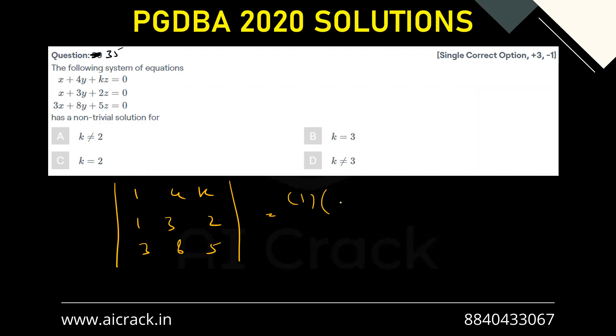we will be getting 1 times 15 minus 16 minus 4 times 5 minus 6 plus k times 8 minus 9, which equals to 0. So this becomes minus 1, this becomes plus 4, this becomes minus k equals to 0. So k equals to 3 is the answer. So b is the correct answer.